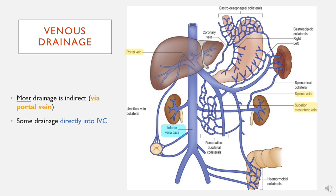Some areas drain straight into the IVC. For example, we can see here the inferior aspect of the rectum, and these veins are going straight into the iliac veins and then coming up into the IVC. So they're going straight into the systemic circulation — they will come up the IVC, bypass the liver, and go straight into the heart. And there are a lot of collaterals that are also to be seen around the systemic and the portal circulation. The systemic circulation being that which drains into the IVC; portal circulation being anything that drains into the SMV, IMV, and splenic. And there's linkage between the two systems.